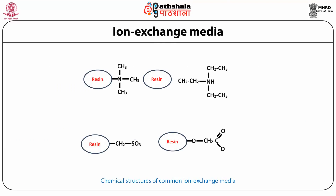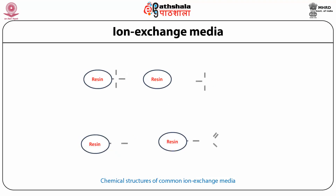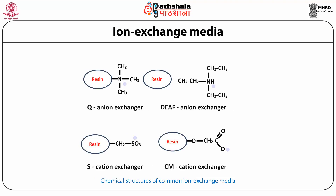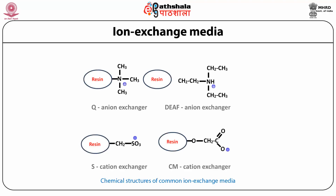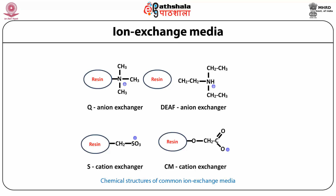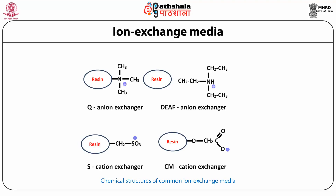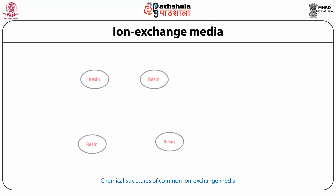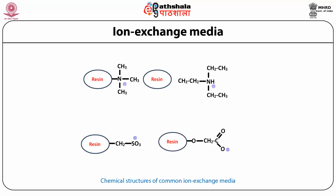The figure on screen shows the chemical structure of common ion exchange media. First is Q anion exchanger, then DEAE anion exchanger, S cation exchanger and CM cation exchanger. Q and DEAE are anion exchangers; S and CM are cation exchangers. Q is a strong anion exchanger and DEAE is a weak anion exchanger. S is a strong cation exchanger and CM is a weak cation exchanger.